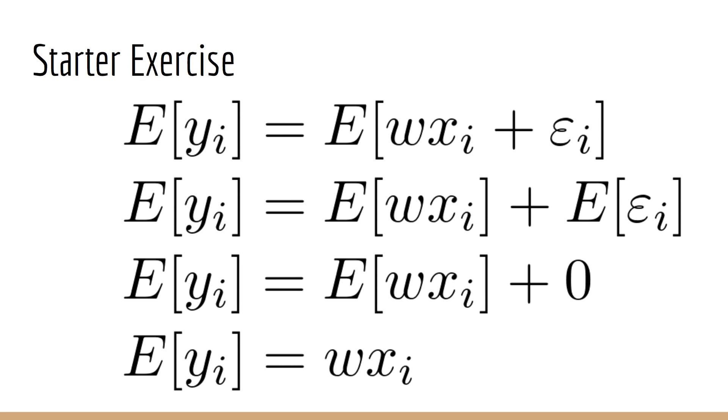Note that this is one part where the classical method deviates from the Bayesian method. In the Bayesian method, w has a distribution, but in the classical method, w is fixed. In any case, we can see that the expected value of y sub i is just w times x sub i.